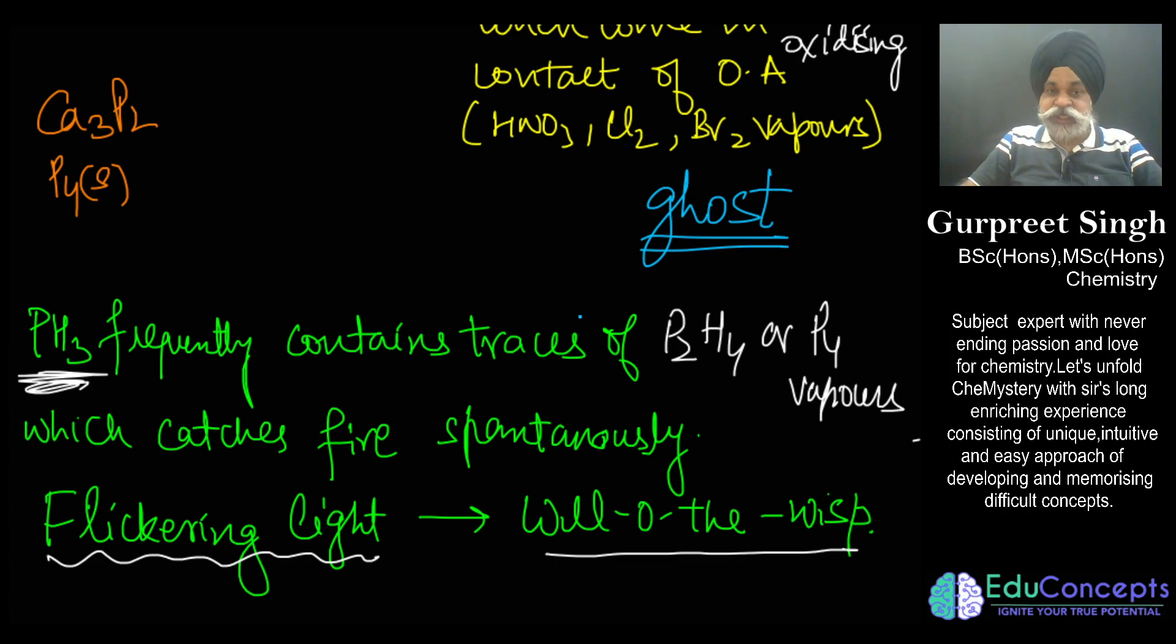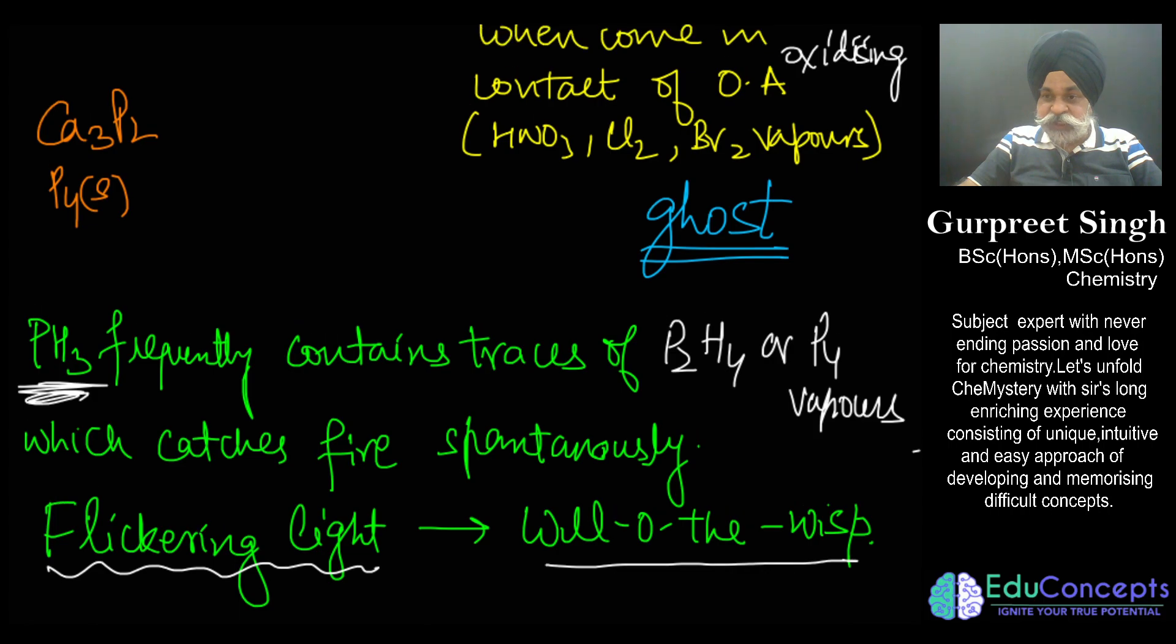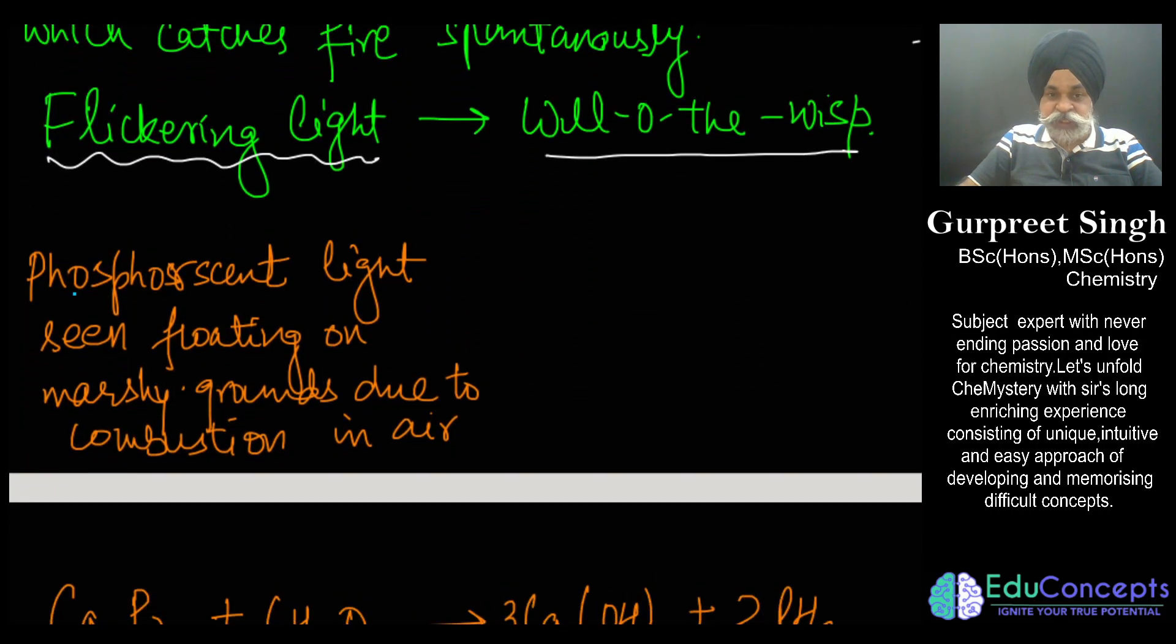So actually it is phosphine along with some hydrocarbons produced in the marshy area from rocks containing calcium phosphide. This fluorescent light which is being produced, as I have written here, fluorescent light seen floating on marshy grounds due to the combustion in air, is also called will-o'-the-wisp.